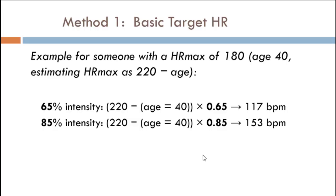For method one — basic target heart rate — it's straightforward math. Say you want 65% intensity for a 40-year-old: using Fox-Haskell, max heart rate = 220 − 40 = 180. Then 65% of 180 = 117 beats per minute for moderate intensity exercise. For vigorous intensity at 85%: 85% of 180 = 153 beats per minute. So 117 bpm is your moderate intensity target and 153 bpm is your high intensity target.